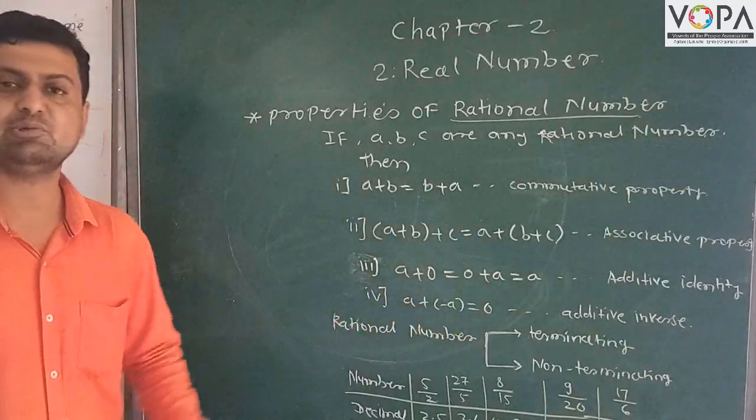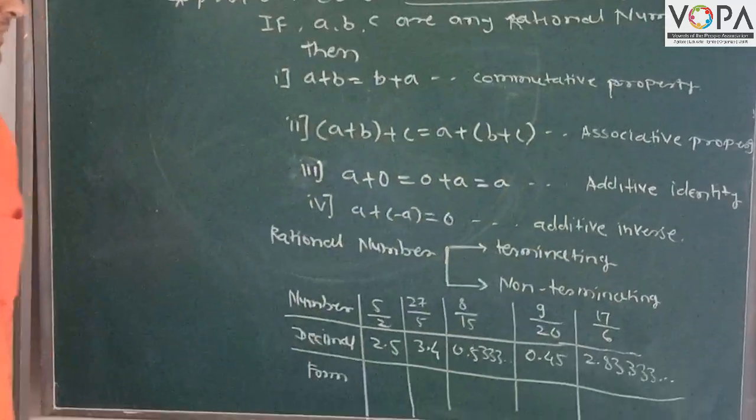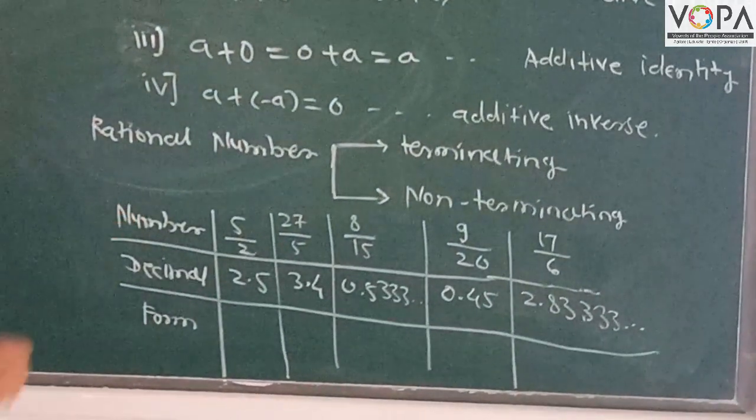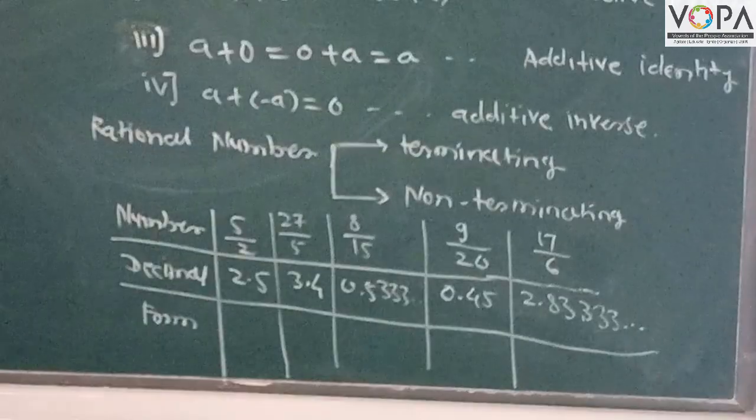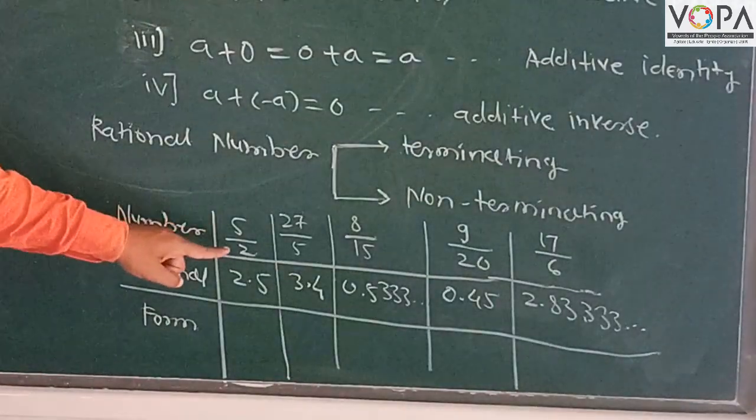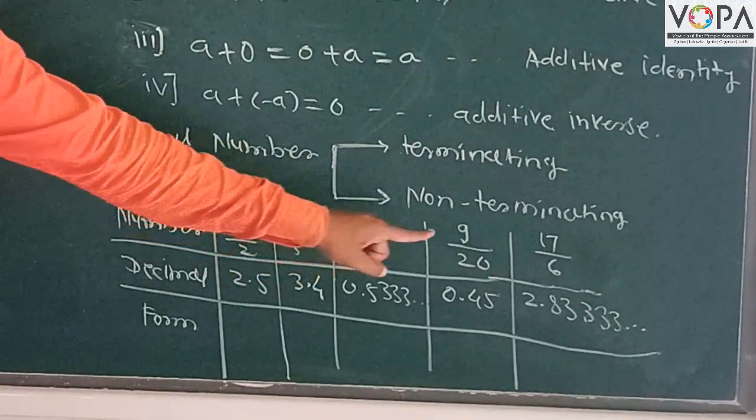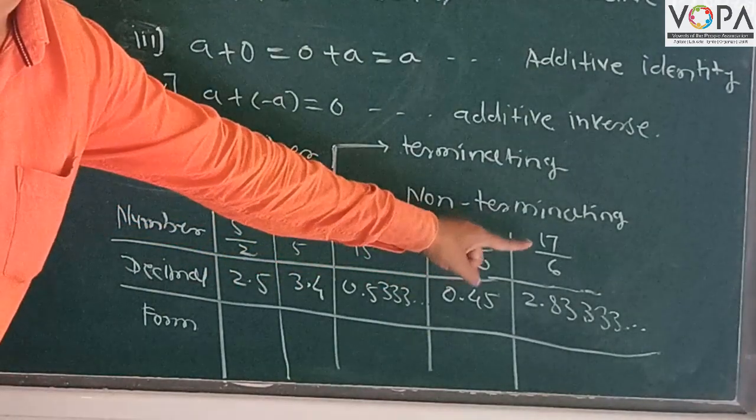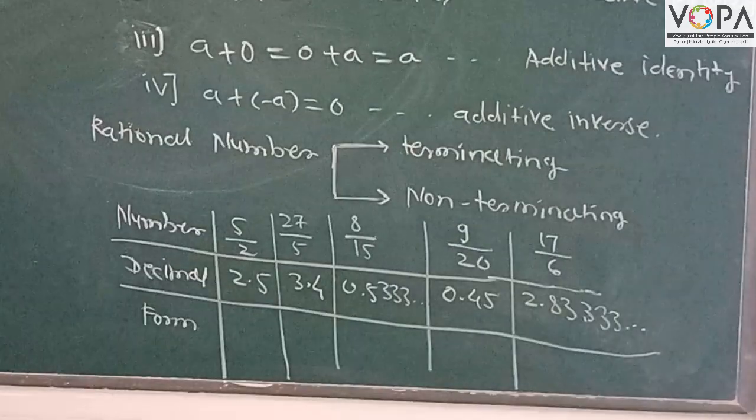It is an important part of our syllabus. Here we have a few numbers: 5/2, 27/5, 8/15, 9/20, and 17/6. These numbers are written in decimal form. First, 5/2 in decimal form is 2.5.